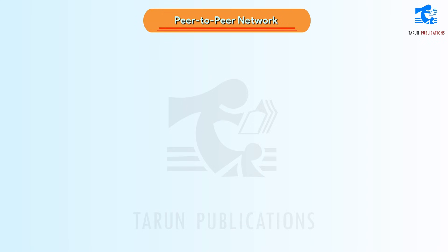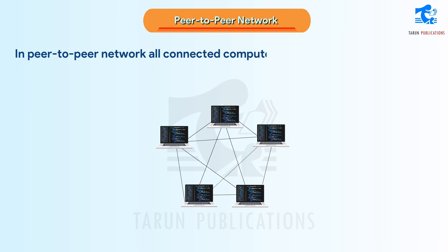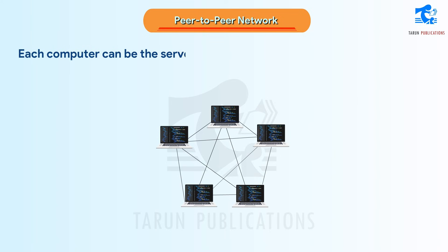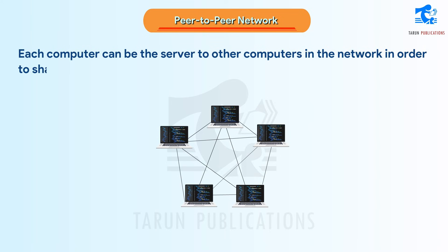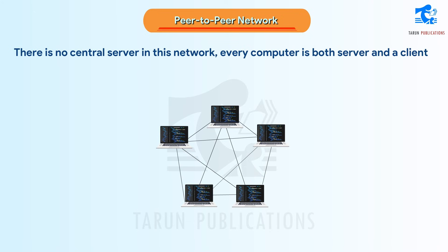Peer-to-Peer Network: In a peer-to-peer network, all connected computers have equal responsibilities. Each computer can be the server to other computers in the network in order to share resources. There is no central server — every computer is both server and client.